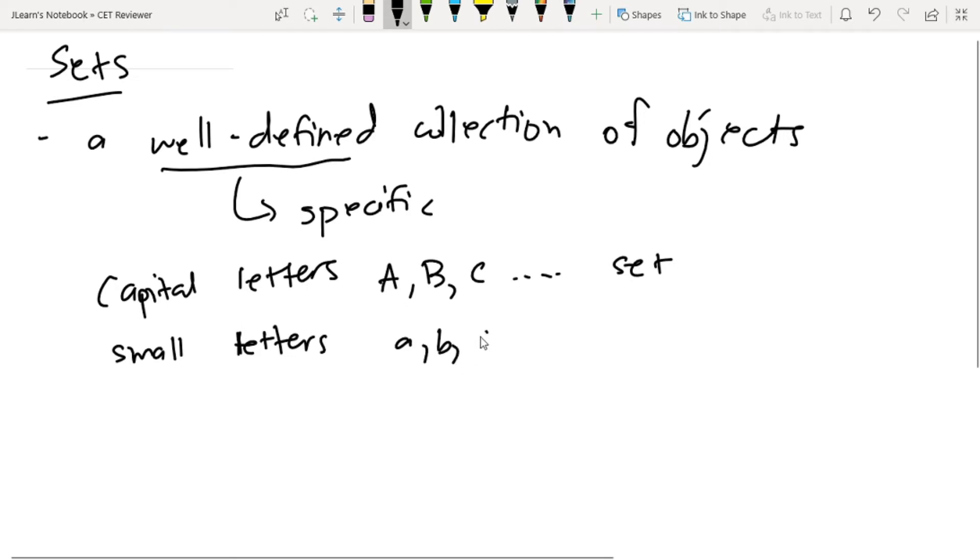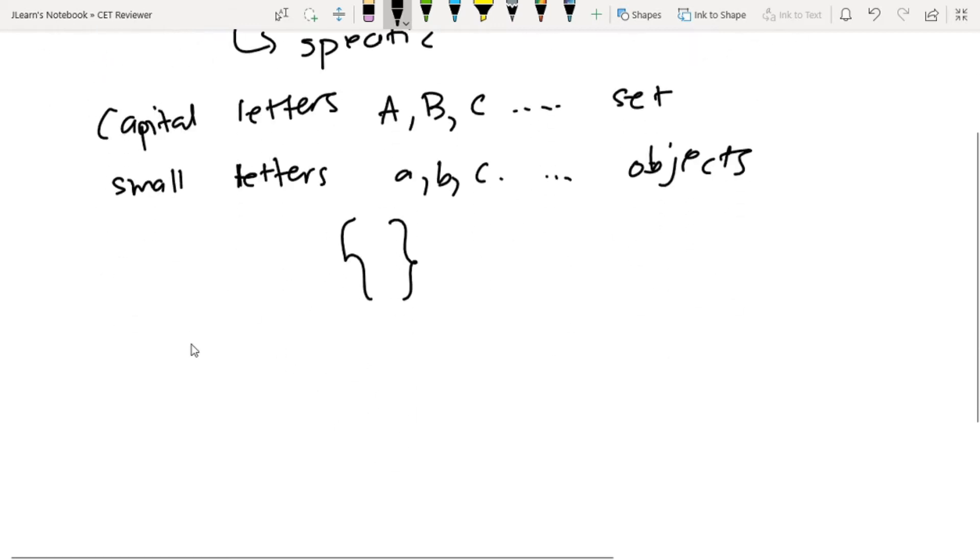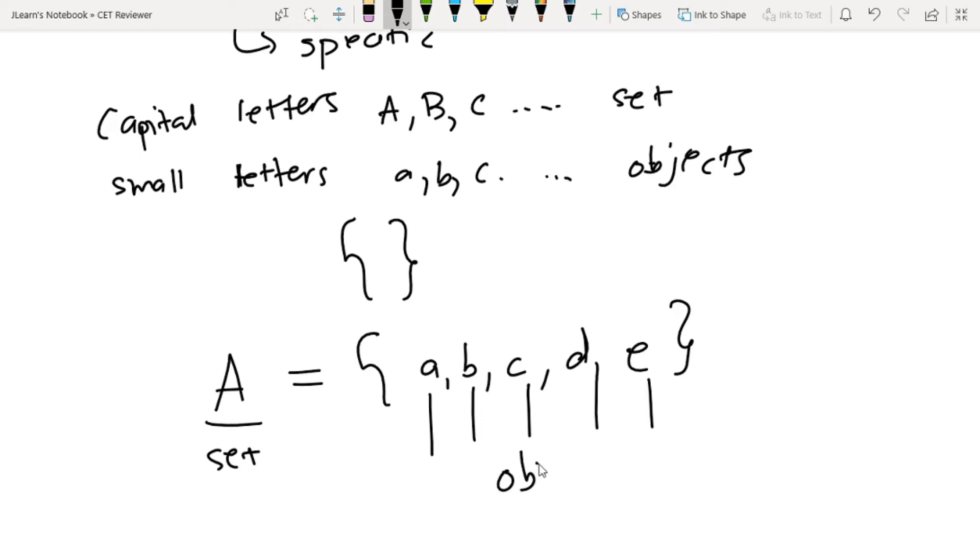We represent sets using curly braces like this. For example, let's make set A. Capital letter A equals the set of small letters a, b, c, d, and e. So this is the set and each one of these are objects.